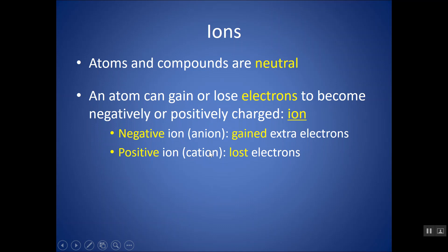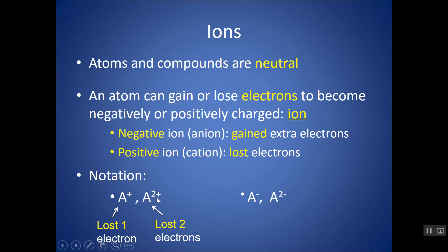Sometimes it sounds counterintuitive — if you gain something, it becomes negative. But because electrons are negative, gaining them gives you a net negative charge. So how do you know if you have an atom or an ion? If there is a charge, in the notation it's going to be written in the top right-hand corner. If you see positive, that means you've lost electrons. If you see a plus two, that means you've lost two electrons. If you see a plus one, you've lost one electron, and it's common notation that you don't have to put a one in — you can just put positive if it's a one plus. And often the number comes before the charge — so two plus instead of plus two — but if you wrote plus two, that's totally fine as well.